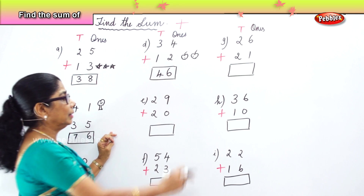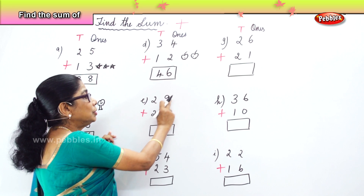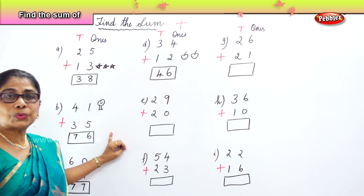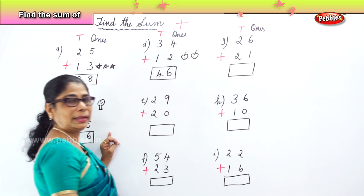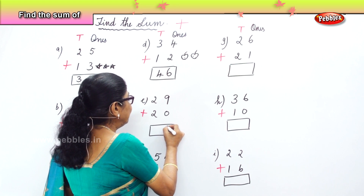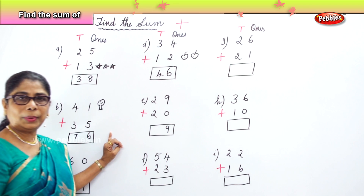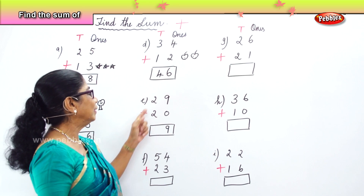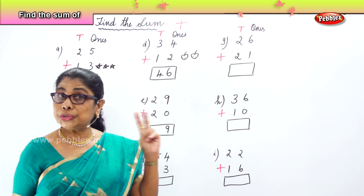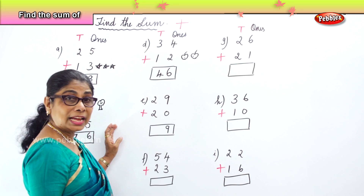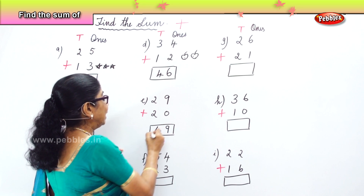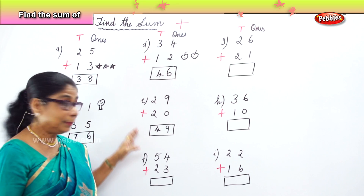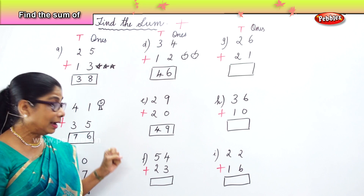Find the sum of twenty-nine plus twenty. You have nine in the ones place and zero in the ones place. Any number plus zero is the number itself, so nine plus zero is nine. In the tens place: two tens plus two tens is four tens. The sum of twenty-nine and twenty gives you forty-nine.